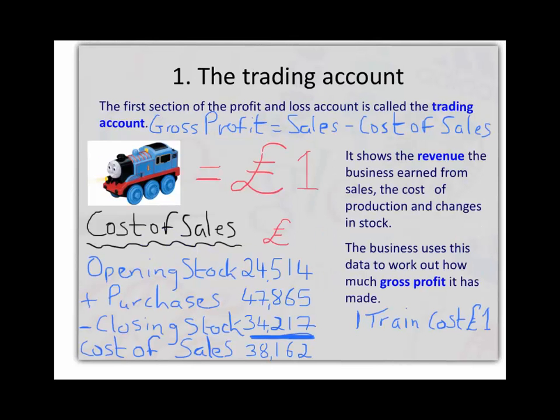The first part of the income statement is the trading account. In the trading account we work out the gross profit — in other words, how much we have made in trading from selling, in this case, our toy trains. Gross profit is calculated by taking the cost of sales away from sales.